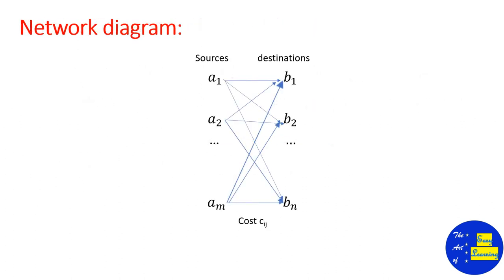Now let us look at the network diagram of the transportation problem. Here we have resources A1, A2, and so on AM, and destinations B1, B2, and so on BN. The cost of transporting an item from source Ai to destination Bj is Cij. From source A1 we can transport items to destinations B1, B2, and so on BN.